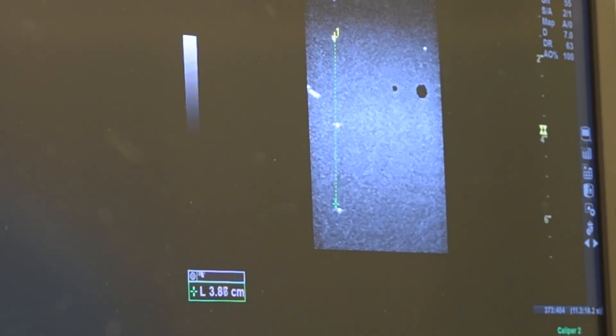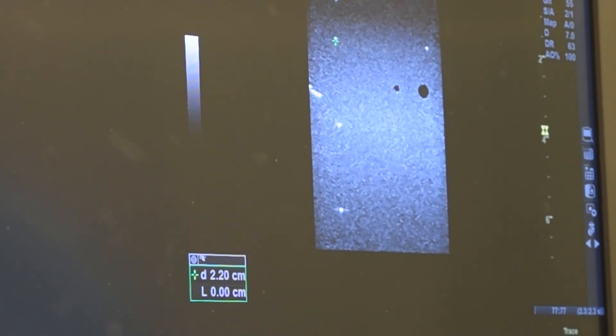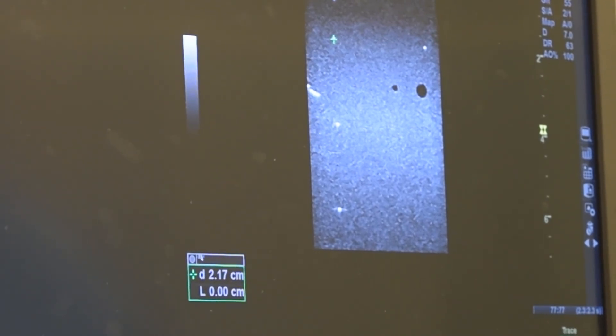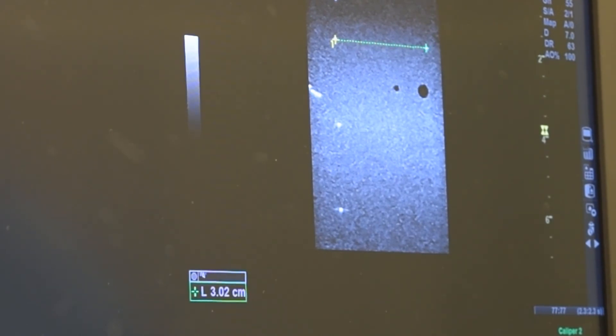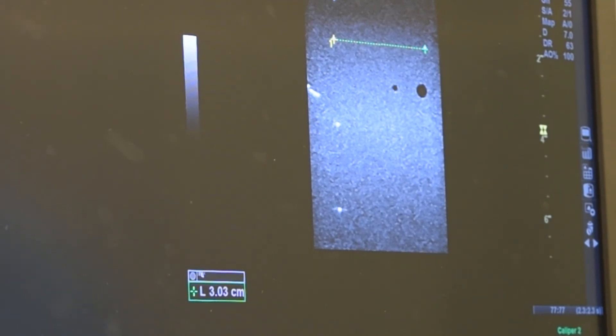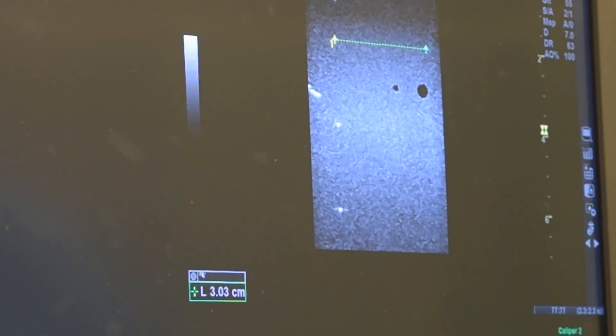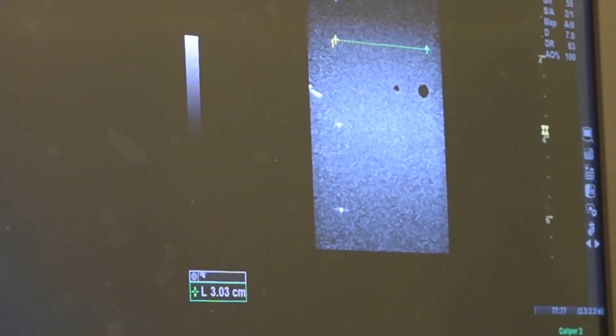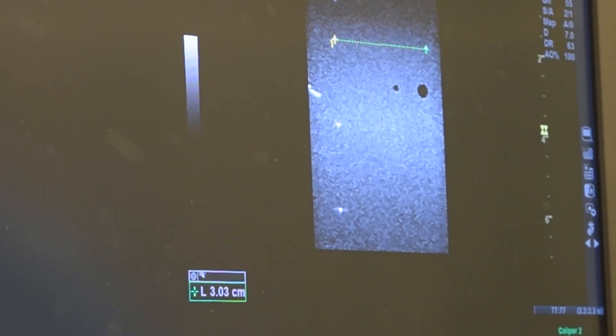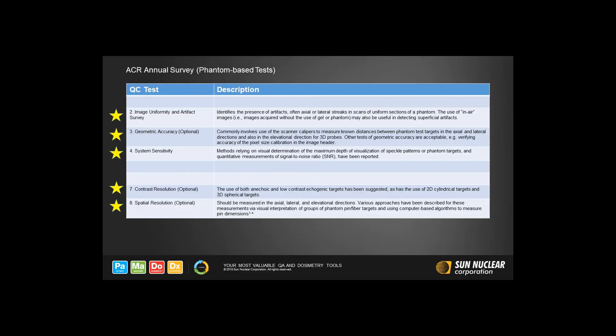We also assess the horizontal measurement accuracy of the transducer and system. Here we've generated an image of the top row of fiber targets. We'll set the cursors to measure the distance between the top two reflectors in the phantom. We always place the cursor in the middle of the first target and then extend it to the middle of the second target. These targets are known to be 3 centimeters apart. Our readout is 3.03 centimeters, which is in excellent agreement with the known distance. Although ACR now lists distance measurement accuracy tests as optional, they are easy to do and a good practice for proper measurement method. And when using horizontal measurements made from images reconstructed from 3D data sets, it is still good practice to do these sets of assessments.